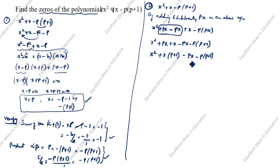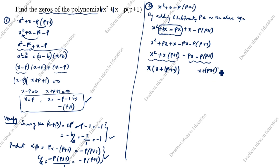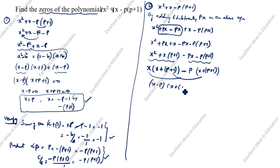We have two groups of two terms. Taking x common from the first group gives x(p + 1). For the second group, x - px - p(p + 1): take p outside from the last two terms. We get x(p + 1) - p(x + p + 1) = 0. So: (x - p)(x + p + 1) = 0.